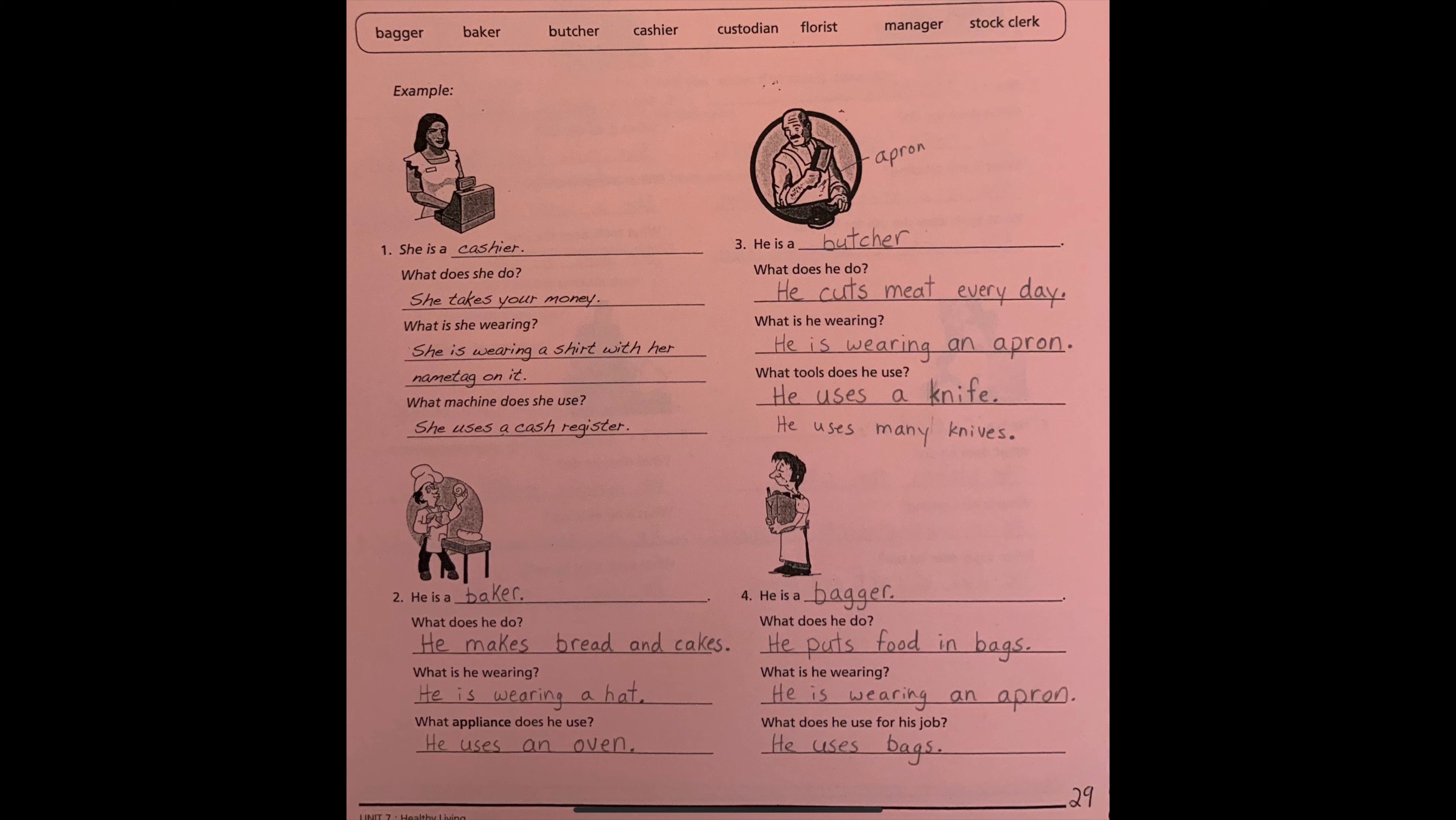What tools does he use? He uses a knife. Remember students, the spelling for knife has a K, a silent K. The spelling is K-N-I-F-E. He uses a knife.